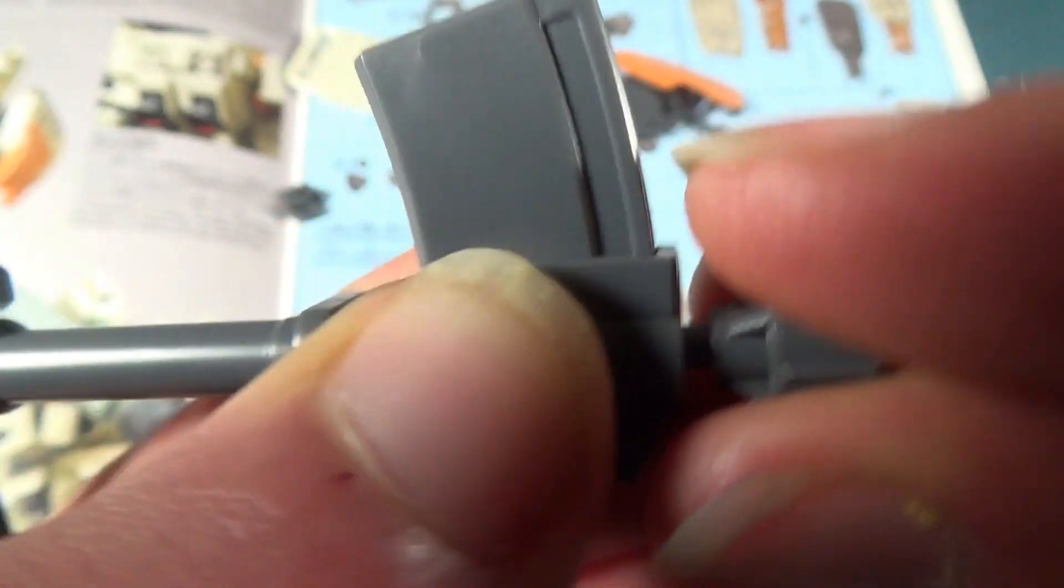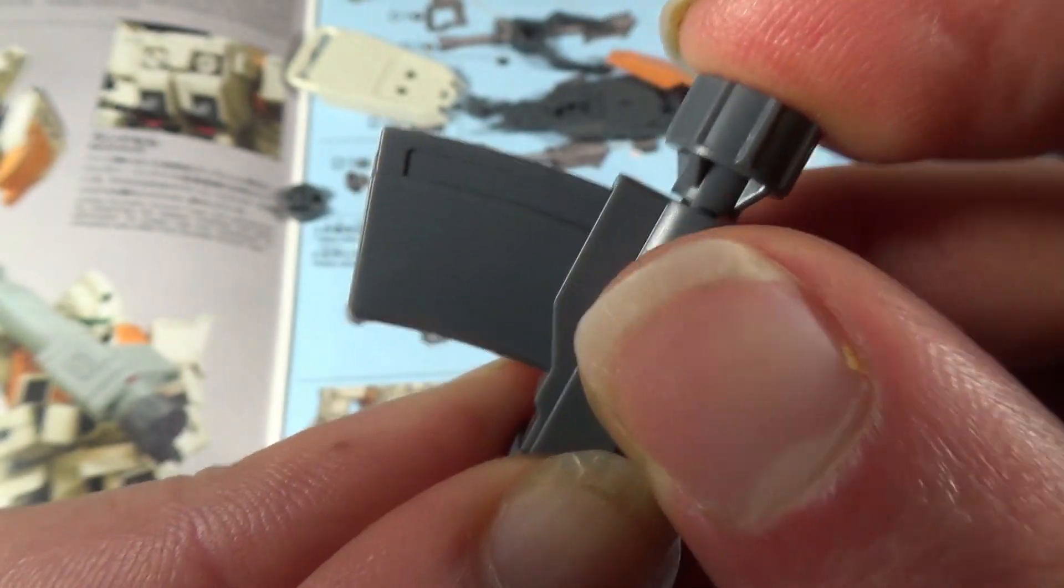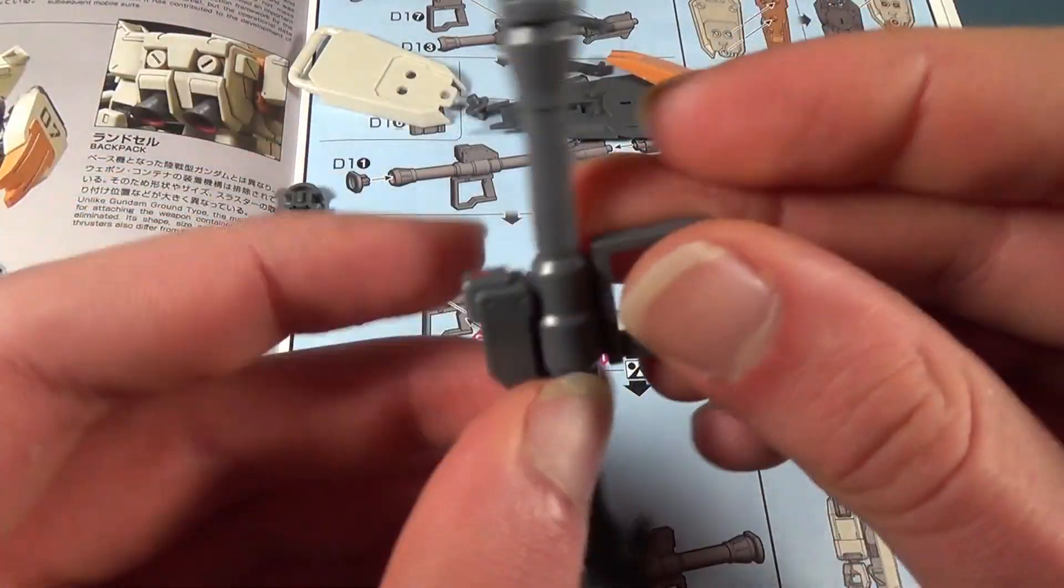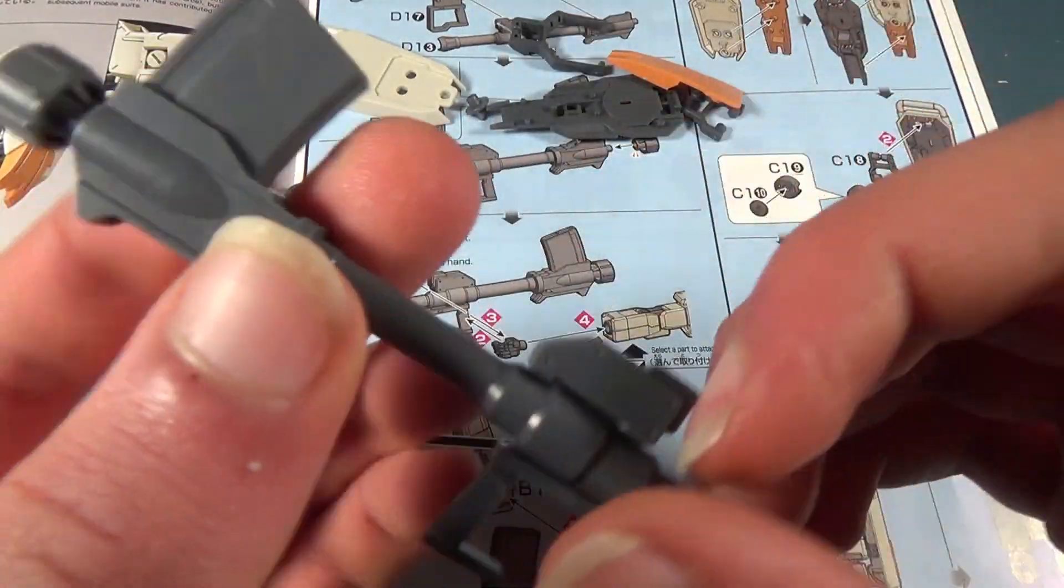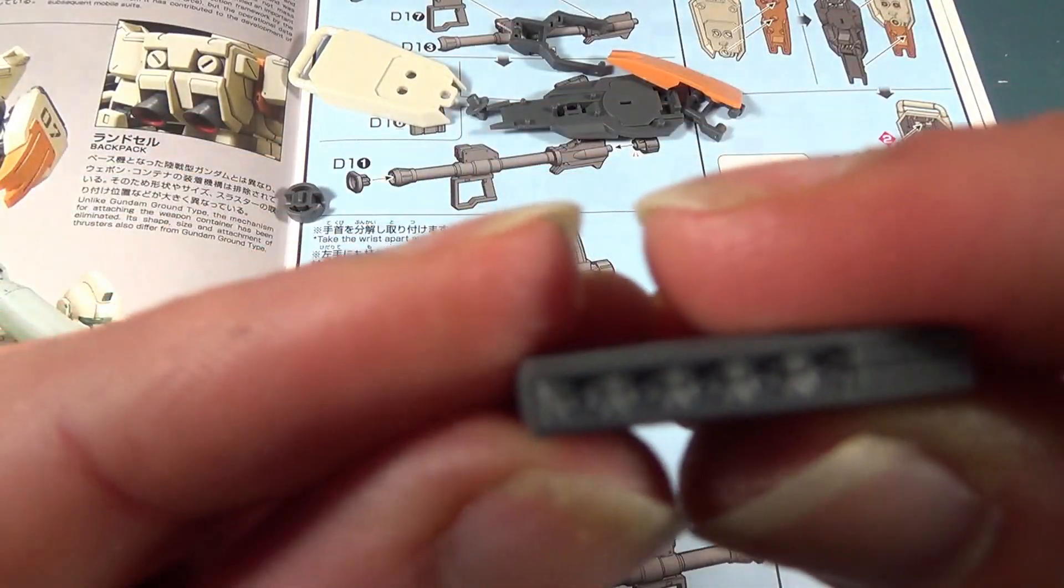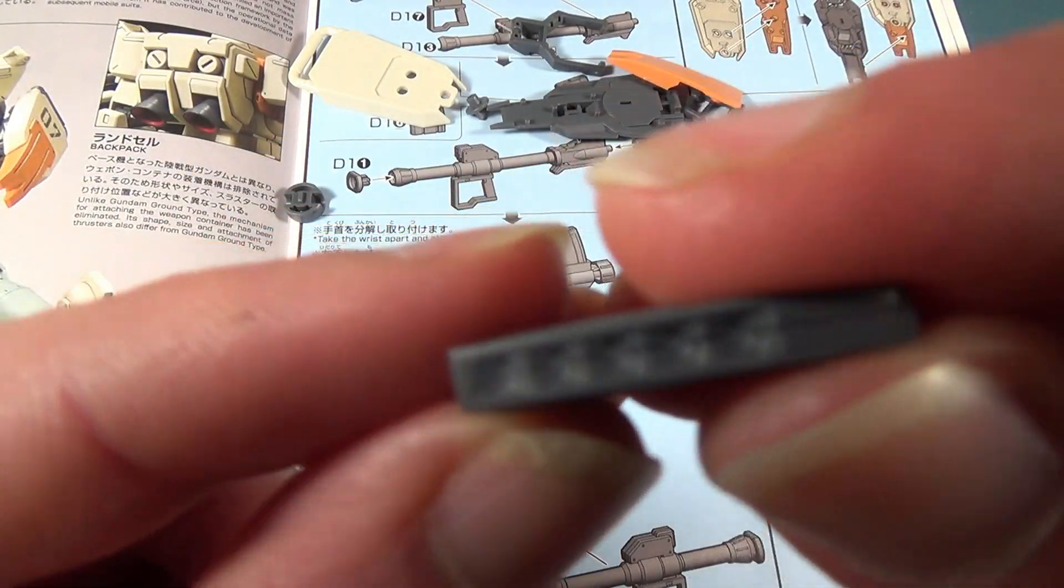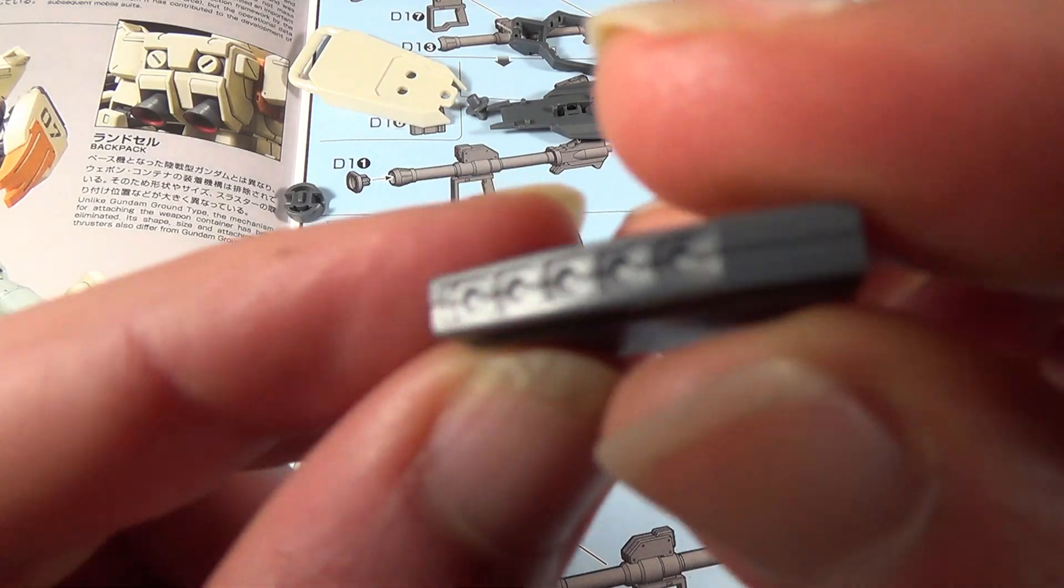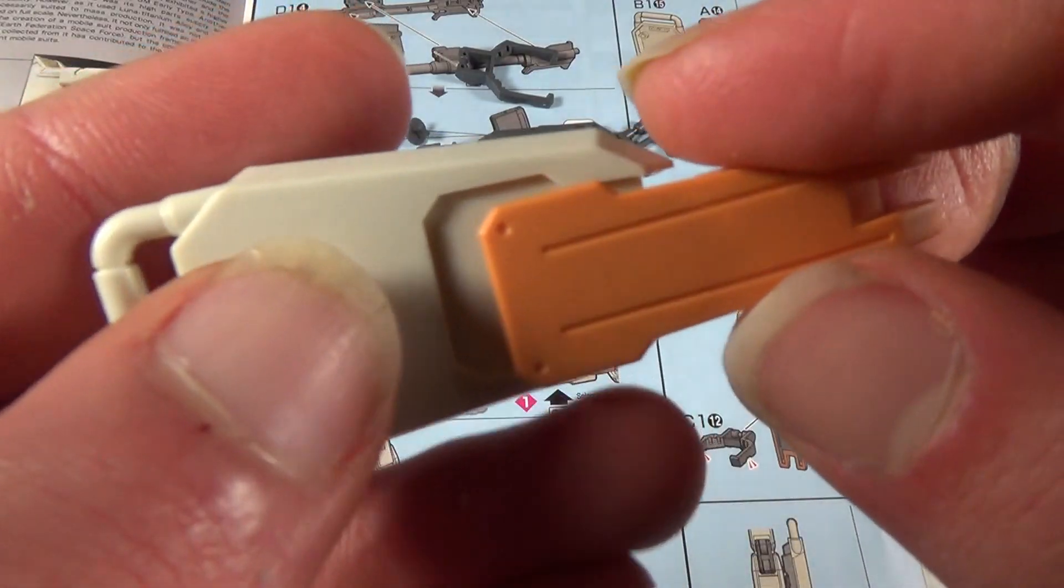And then there you go, complete rocket launcher. The handle can wiggle a little bit. The ammo magazine comes out. And if you look in here, you could do a little bit of painting in there if you wanted to kind of accentuate those little rockets.